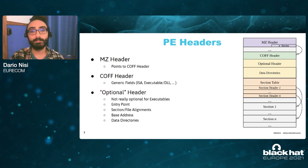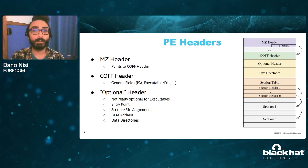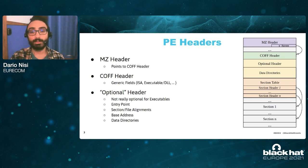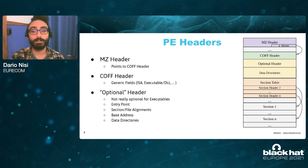After the COFF header, we find the optional header, whose name may actually sound a little bit misleading because this header actually contains vital information without which the operating system would not know how to load the program in memory correctly. Such information includes the entry point, which is the address of the first instruction in the program, the section and file alignments, the base address at which the program prefers to be loaded, and the data directories, which play specific roles in loading the file in memory, such as the import table, the export table, relocations, and certificate table.